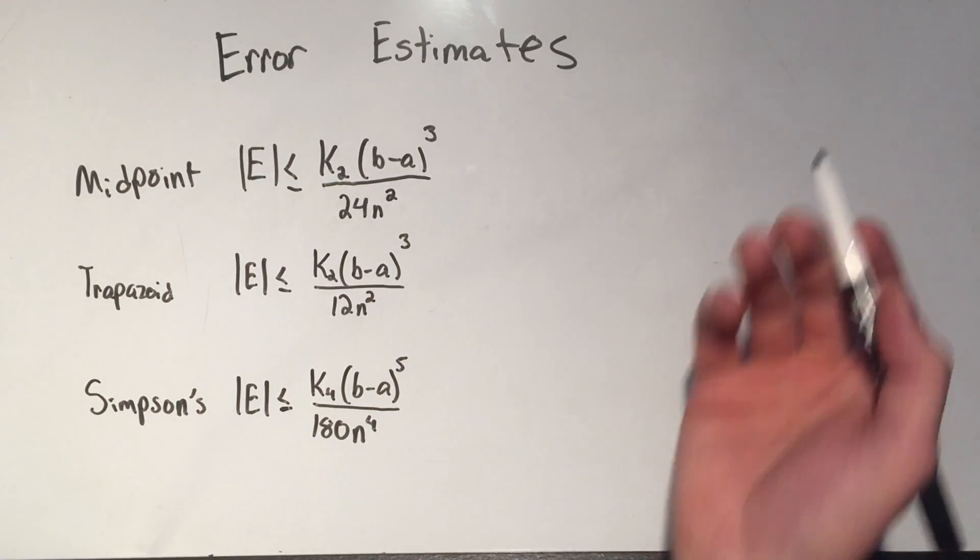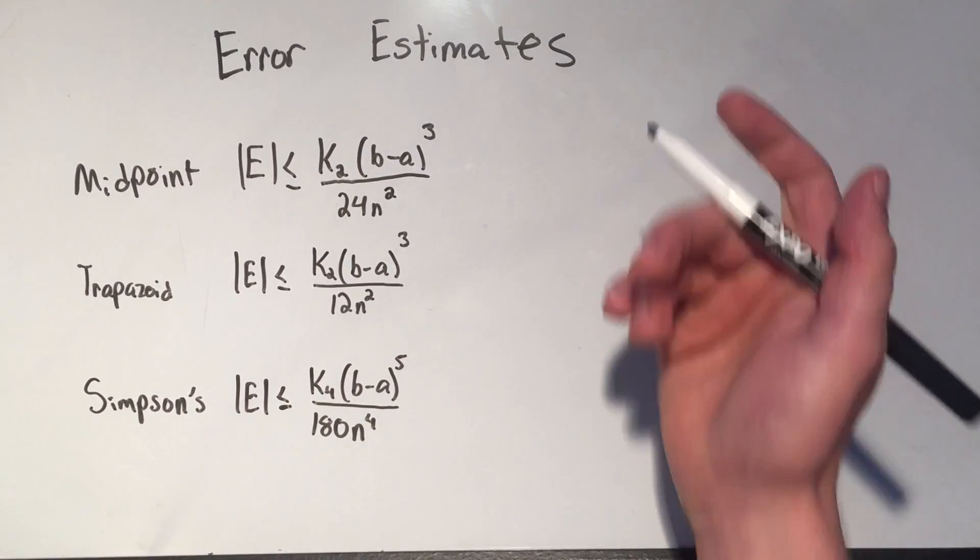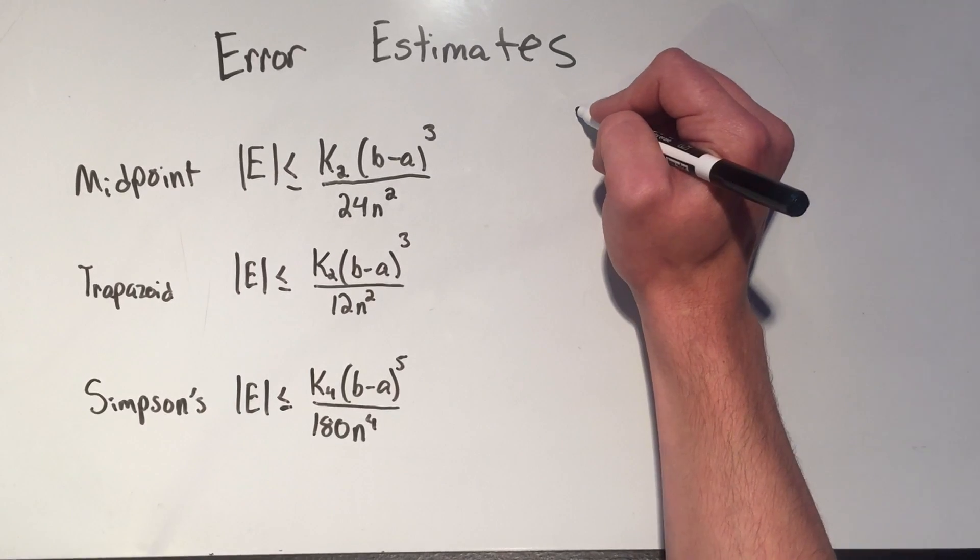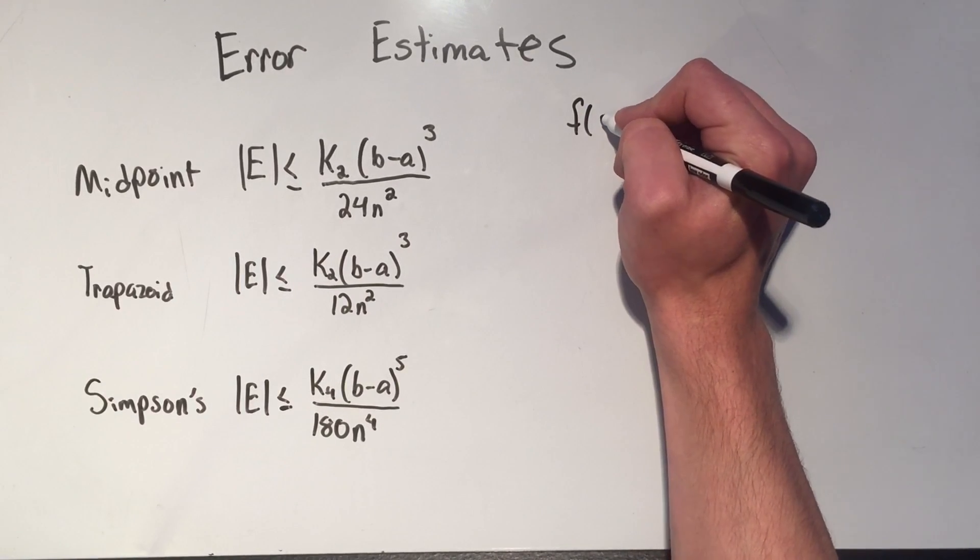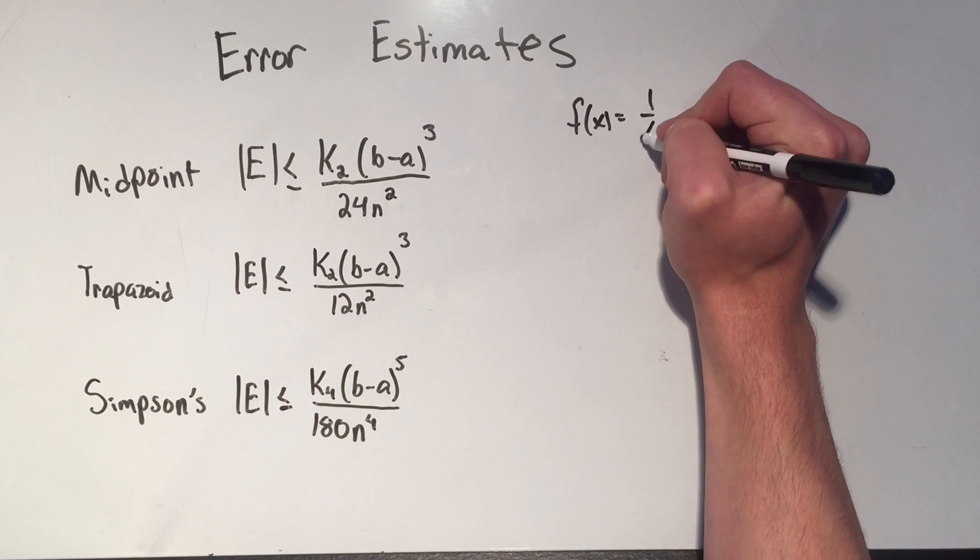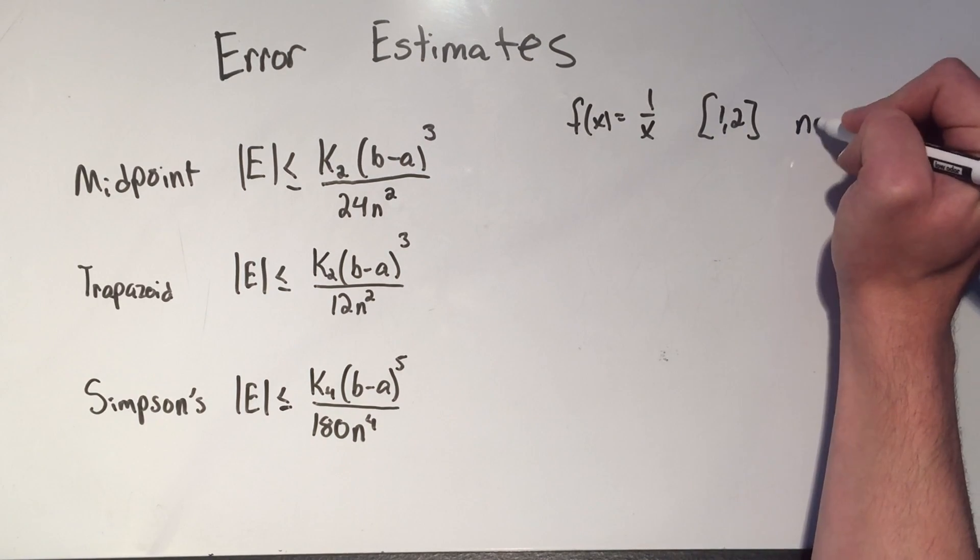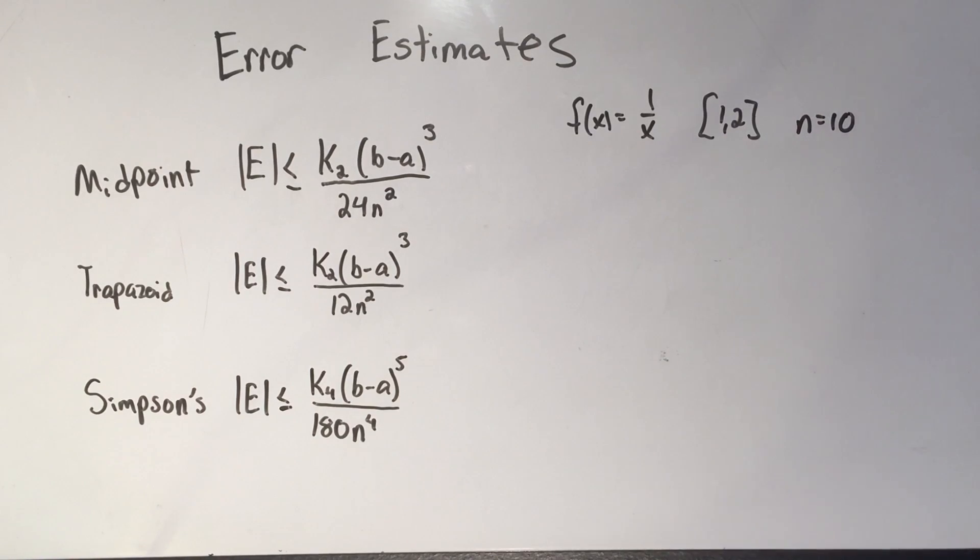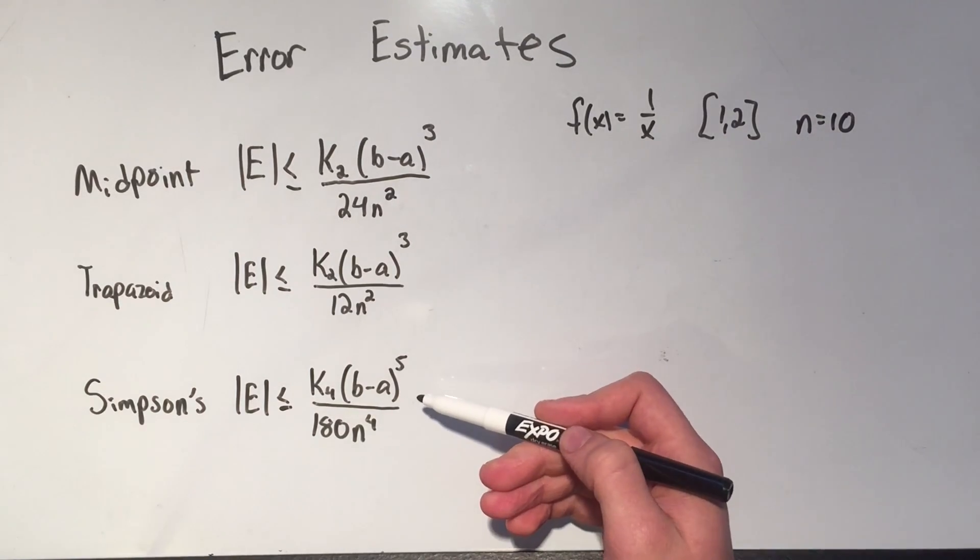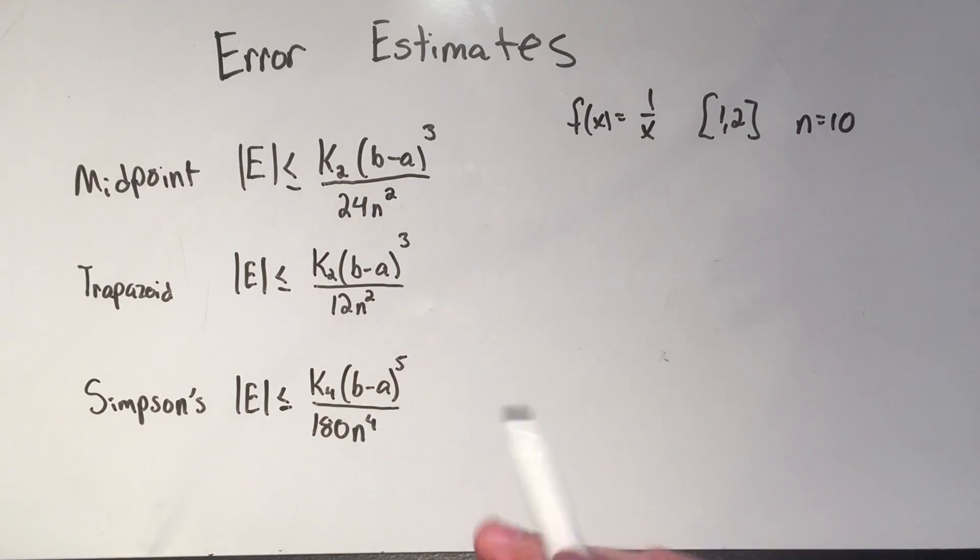So let's just do an example. The example I'm going to show you with all of this, I'm going to be finding the error for my function, which is one over x, on the interval one to two, with ten subintervals. Now I'm not going to do the different approximations for all of this, this is going to take forever, I'm not going to do that. I'm just going to show you what the error would be for all of these.